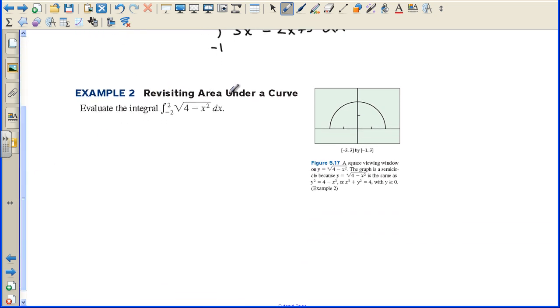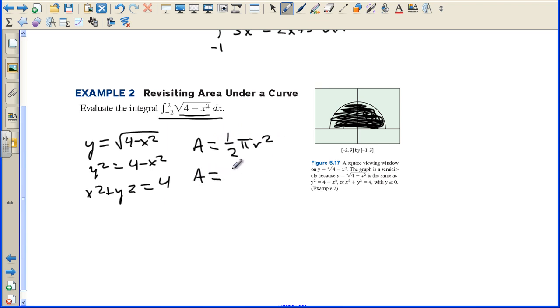Example 2, revisiting area under a curve. Evaluate the integral from negative 2 to 2 of the square root of 4 minus X squared. This is a circle. As a matter of fact, it's a half circle. If we square both sides, we have X squared plus Y squared equals 4. So the radius is 2. Here's a graph of the function. We're really finding this area under here. This is a known object. We know the area of a circle. The area equals, since it's half a circle, 1 half pi R squared. The radius in this case is 2, so we have 1 half pi times 2 squared. That's 1 half pi times 4, so the area is 2 pi of this half circle.